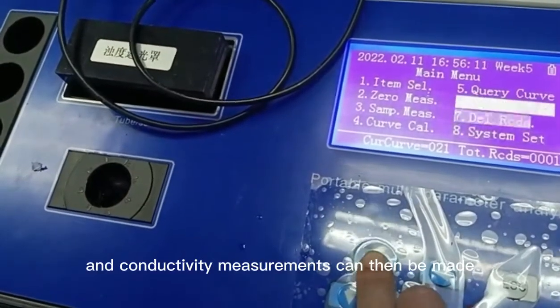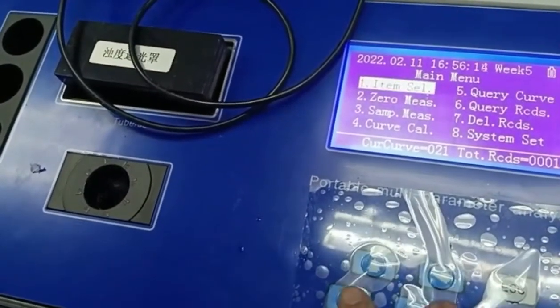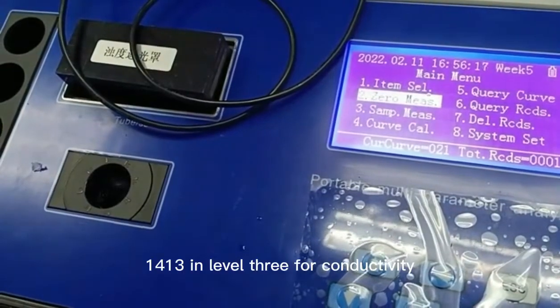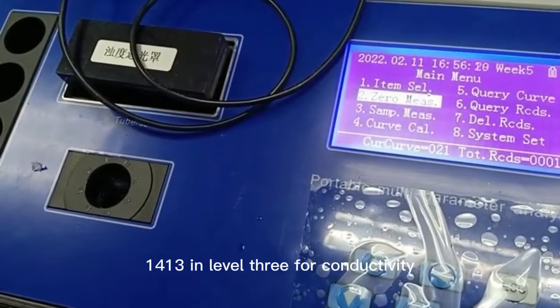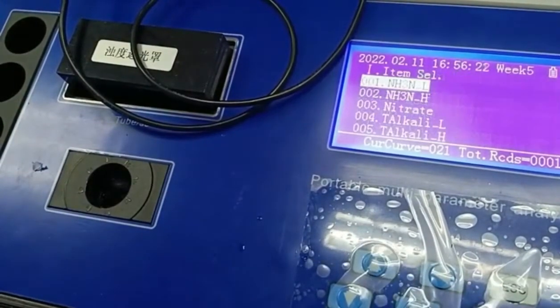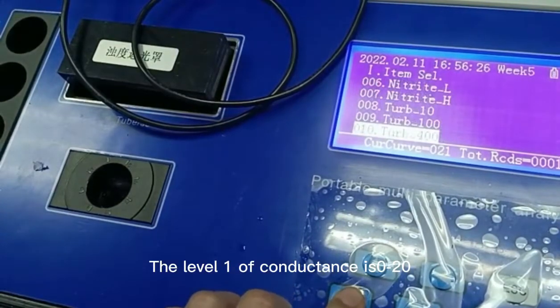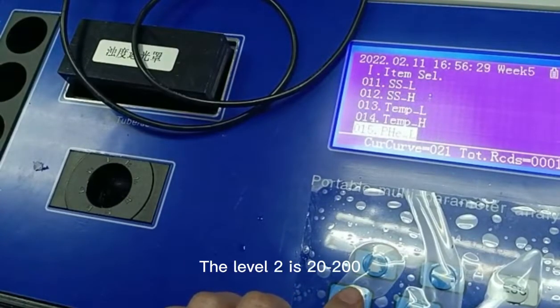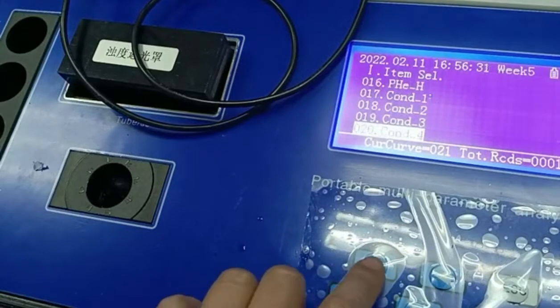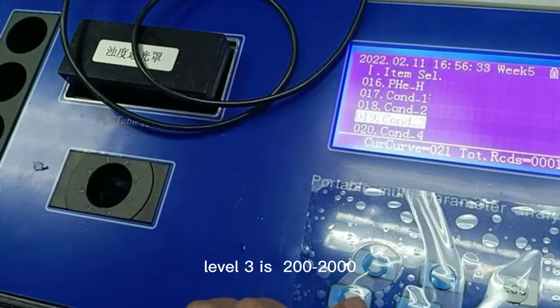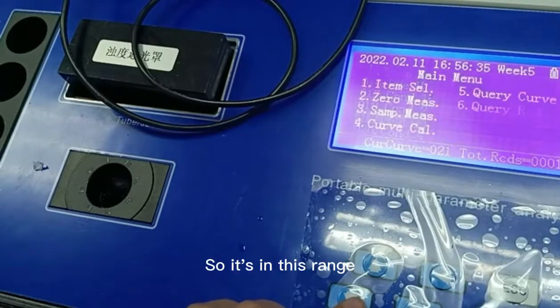And conductivity measurements can then be made. 1413 is in level 3 for conductivity. The level 1 of conductance is 0 to 20. The level 2 is 20 to 200. Level 3 is 200 to 2000. So it's in this range.